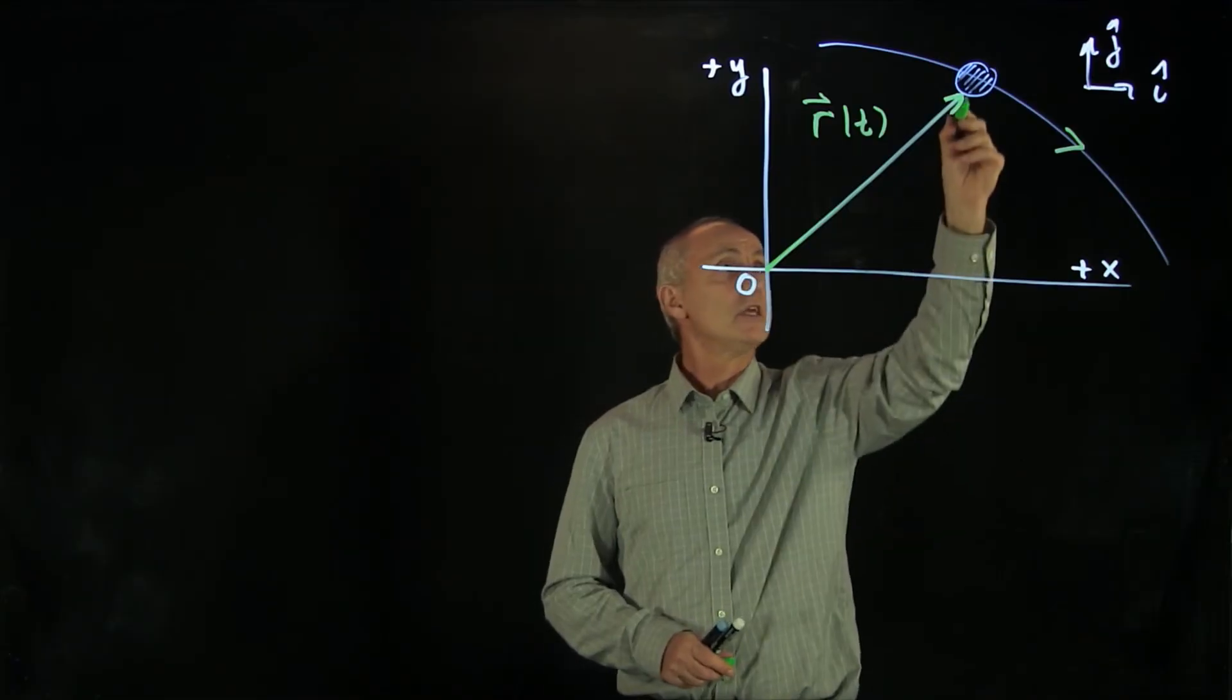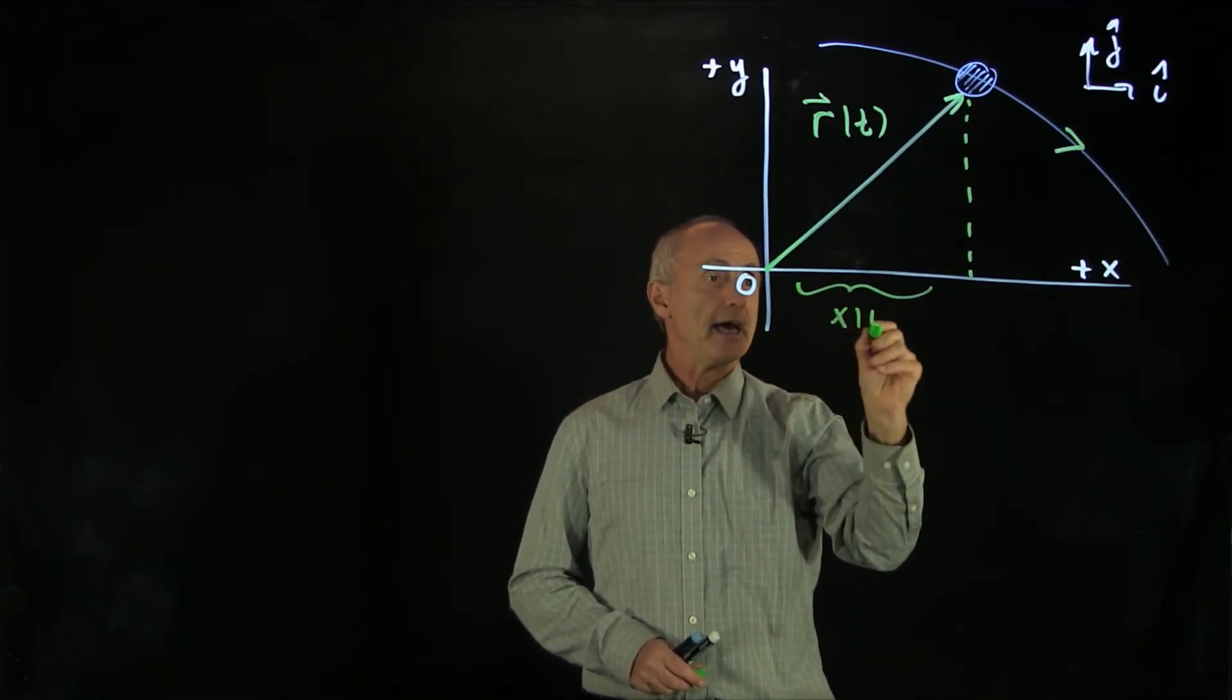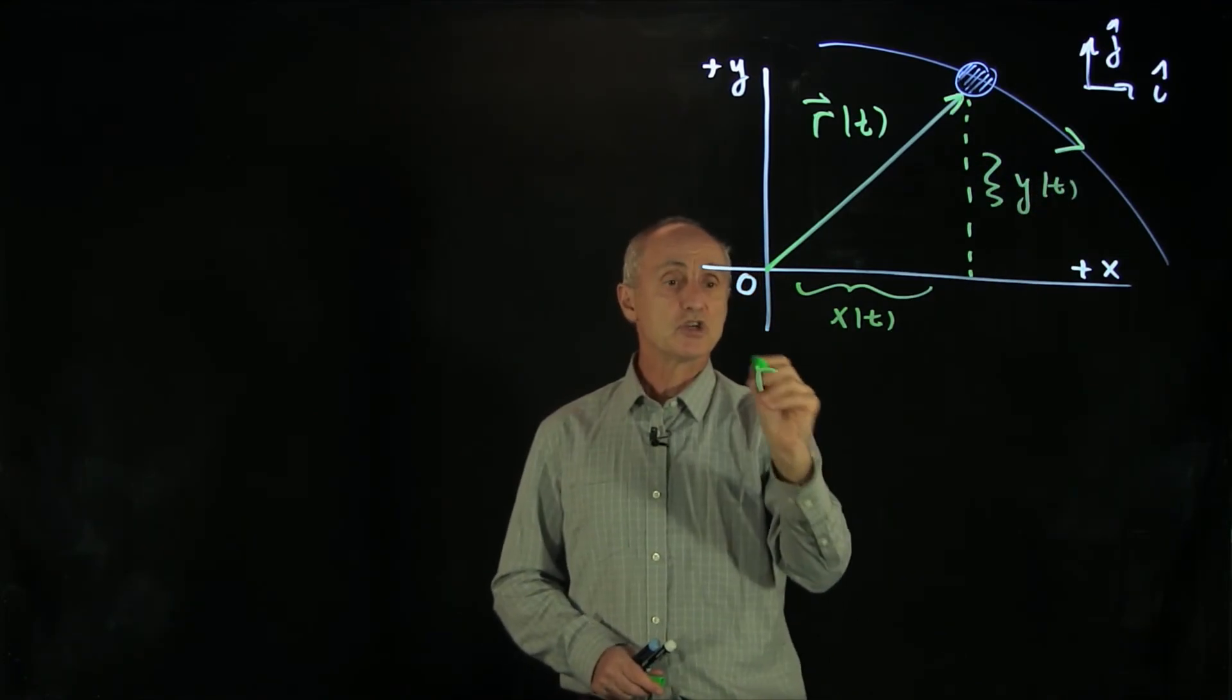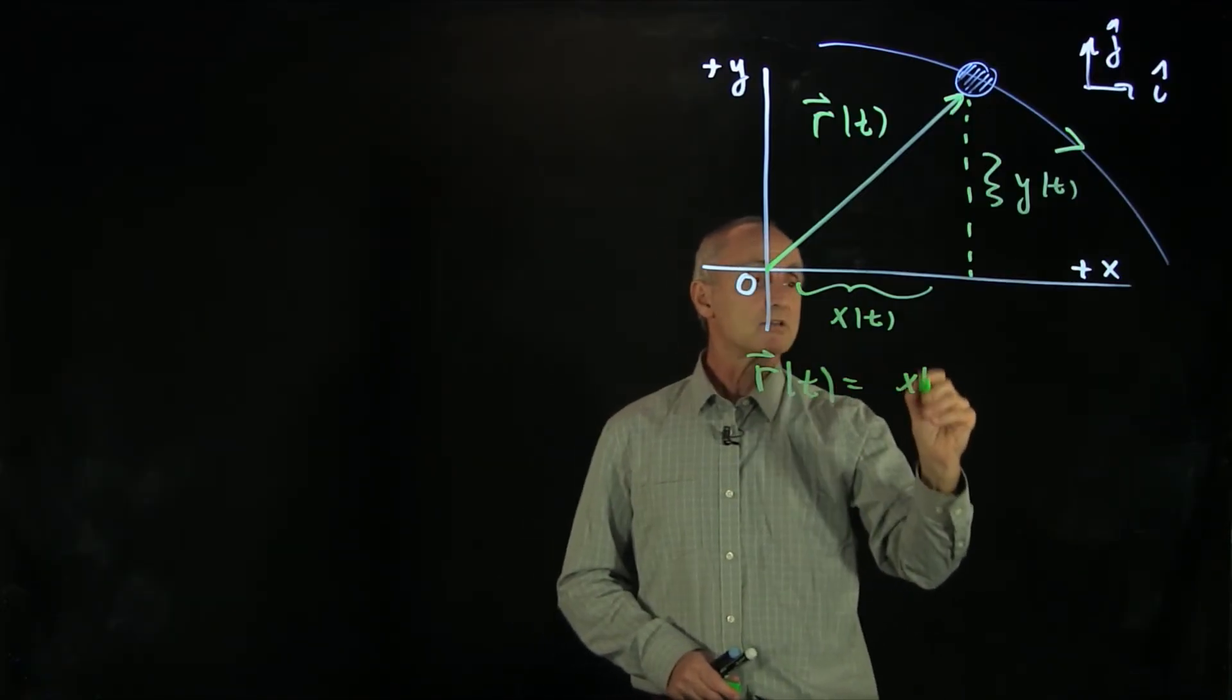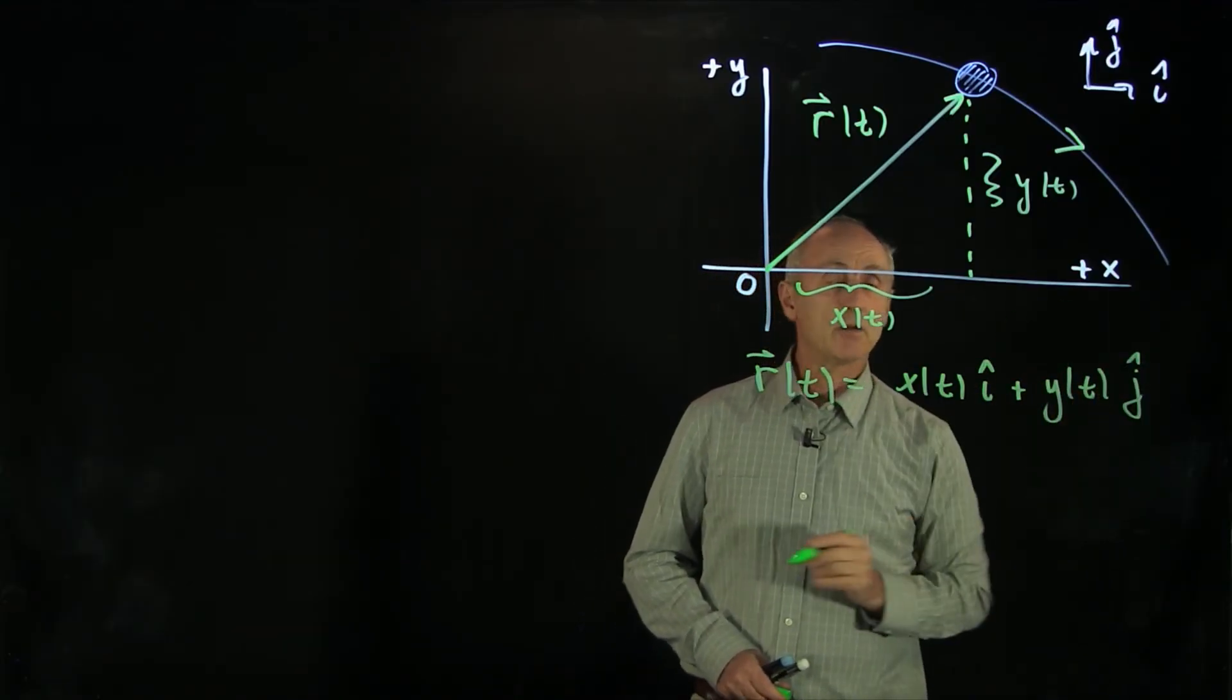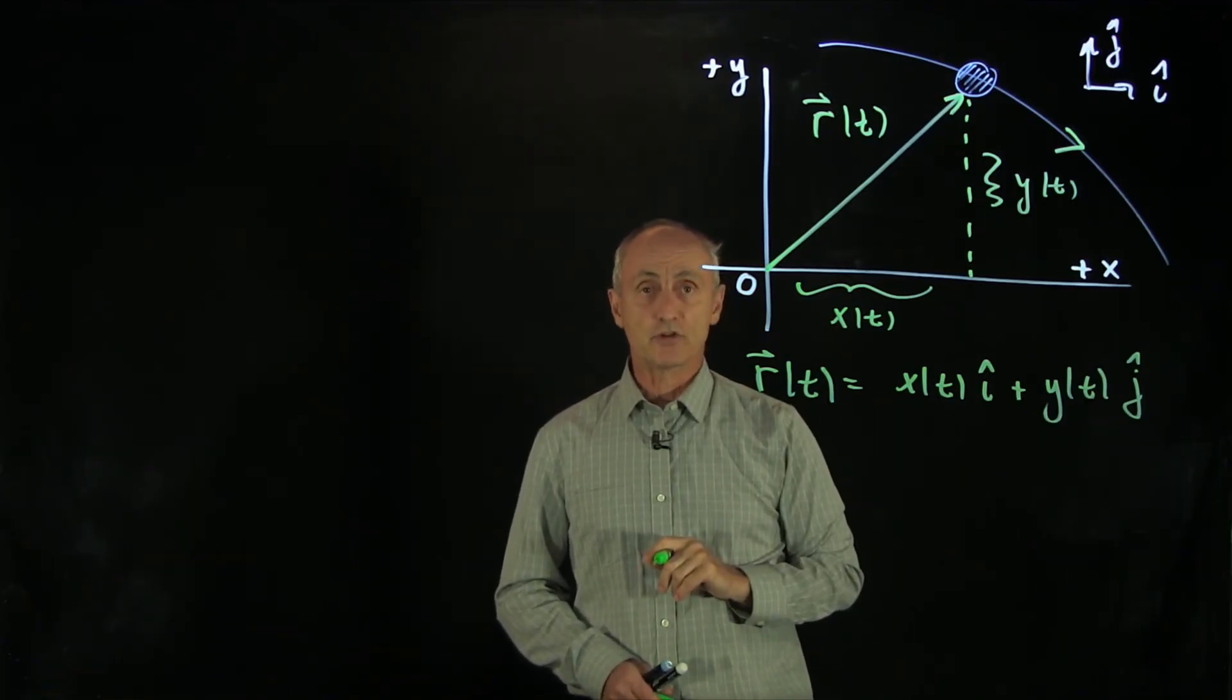We'll write down r of t in terms of two coordinate functions, x of t and y of t. So our position vector of the object, r of t, is equal to x of t i hat plus y of t j hat. One of our main goals is to figure out what these position functions are for the motion of objects.